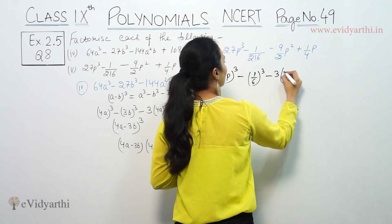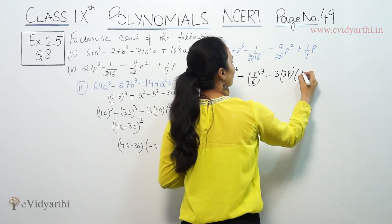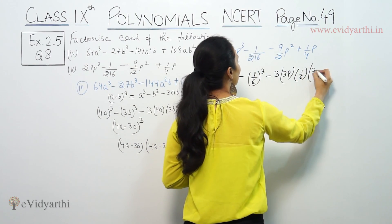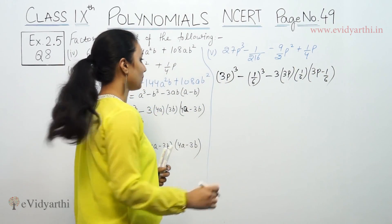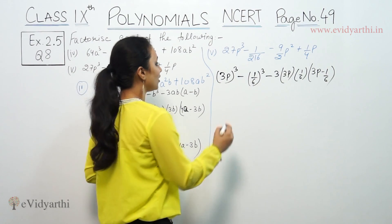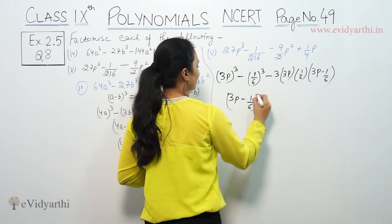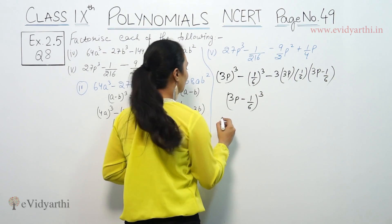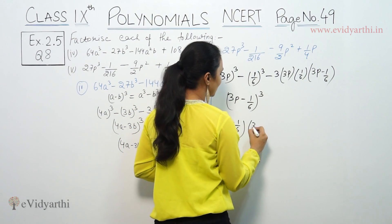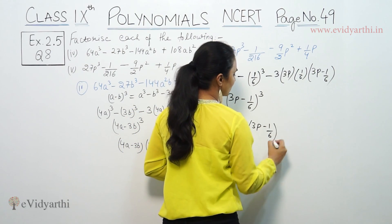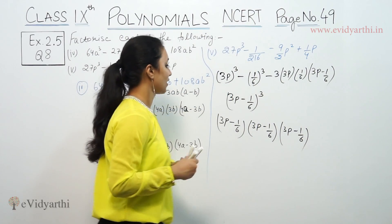Using the (a - b)³ formula with the 3ab term, where a = 3p and b = 1/6, we verify the middle terms match. The answer is (3p - 1/6) whole cube.